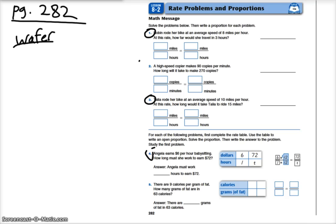Let's start with number one. Number one says Robin rode her bike at an average speed of 8 miles per hour. At this rate, how far would she travel in 3 hours? So we can make pretty good sense of that: 8 miles per hour. Let's fill in our proportions. So we know that she's traveling 8 miles in 1 hour, so over 1 hour of time she can ride her bike 8 miles.